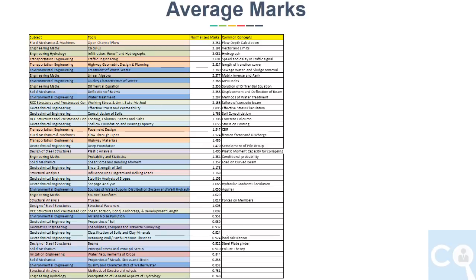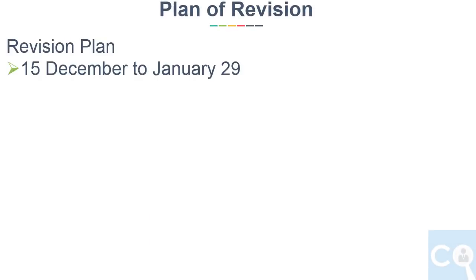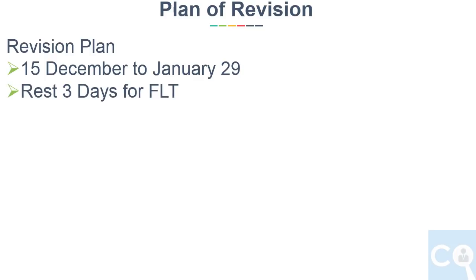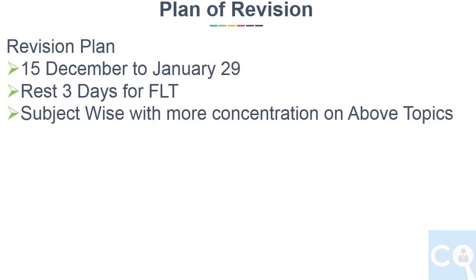Now based on this analysis, we will distribute the number of days to each topic for revision. The third point is the plan of revision. We will assume revision starts from 15 December to January 29, giving us 45 days for revision and the remaining 3 days for full-length tests. Rather than going topic-wise, we will go subject-wise, but concentrate more on the important topics discussed before in each subject.